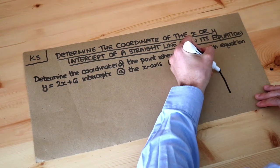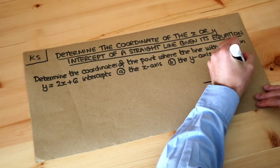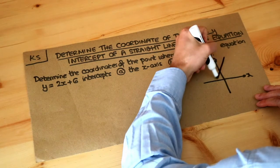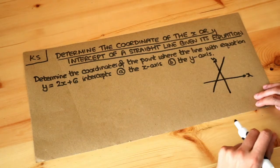Now what do I mean by the x intercept or the y intercept of a line? Well let's just say I've got x and y axis here and let's just say that I had a line with a particular equation.